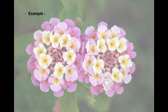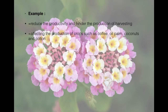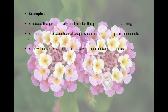Lantana reduces productivity and hinders harvesting, especially in Southeast Asia and the Pacific Islands. It affects the production of crops such as coffee, oil palms, coconuts, and cotton. Lantana also causes the soil to absorb rain at a lower rate than under good grass cover, increasing runoff and the risk of soil erosion.